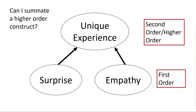A common question I get is: can I create a summated scale with a higher-order construct? The answer is a bit complicated. You can summate the first-order constructs individually, but you cannot summate all the first-order constructs into one overarching measure — you can't combine different constructs into one. For example, I could summate all surprise items into one item and all empathy items into one, but I can't take surprise and empathy and cram them all together into a single measure — that's inappropriate.